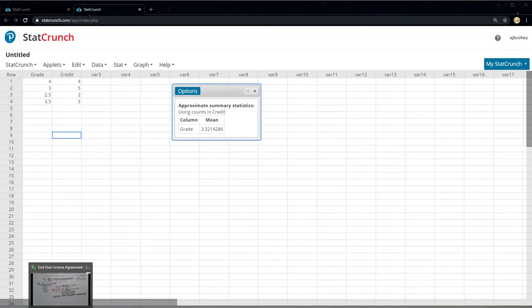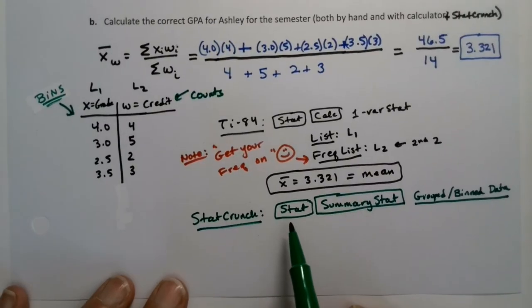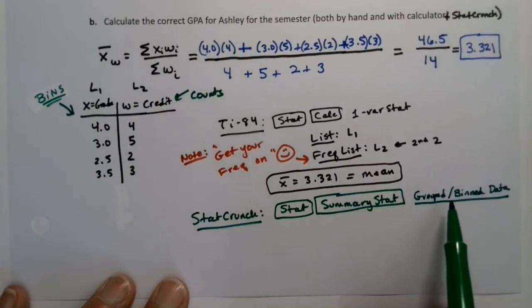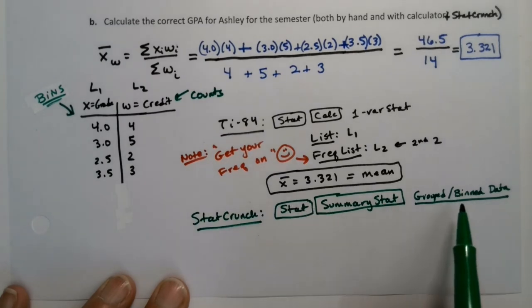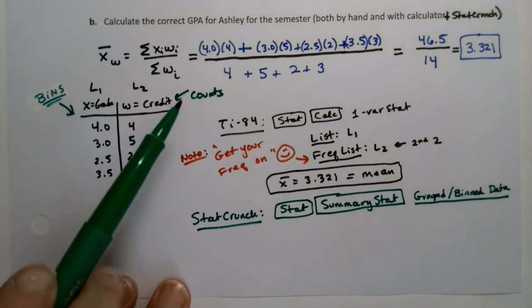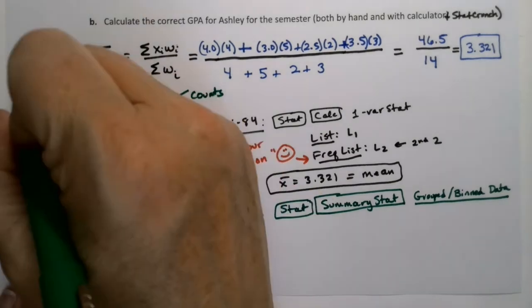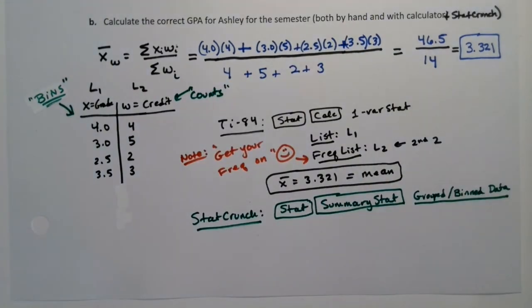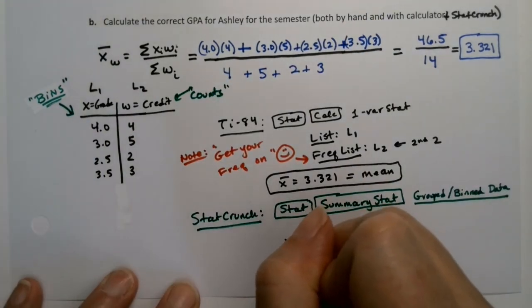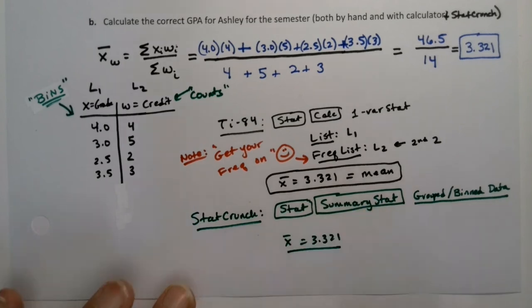I wrote that down on my sheet. On StatCrunch, you hit stat, summary stat, grouped bin data. You don't actually hit any of these - these are just the menus you choose. Then these are your bins over here, these are your counts over here. So I can call them bins and counts. And away you go. It'll find you the mean - 3.321. You can use whichever technology is easier for you or whichever one your instructor wants you to use.